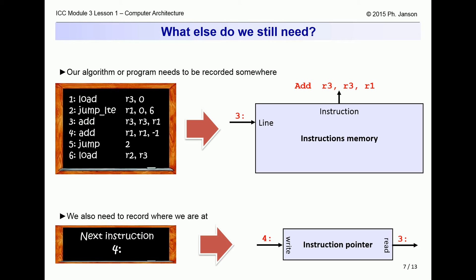The computer also needs to know which line it is currently at in the algorithm that it is executing. To this end, it needs a line memory, also called instruction pointer, which can be read and updated as the computer advances through the algorithm.